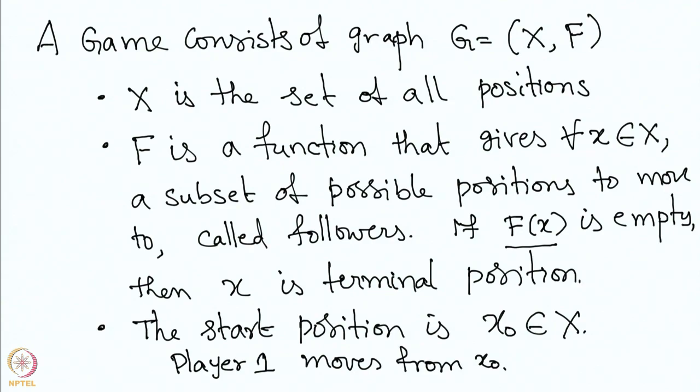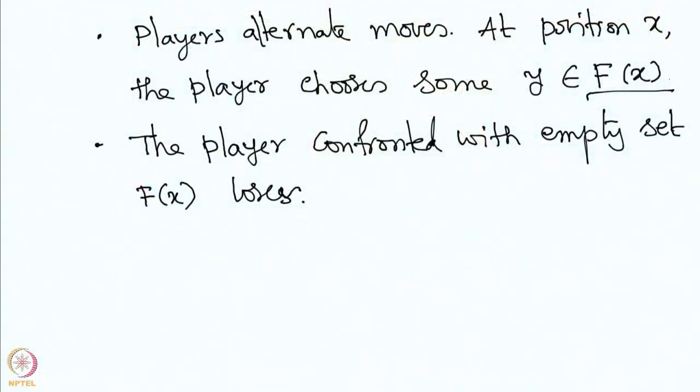The game starts with an initial position x-naught, and player 1 makes his move. Players then alternate their moves. At any position x, the player chooses a move leading to some position in F(x). If a player confronts an empty set F(x), he becomes the loser. In other words, we are in a normal play convention.